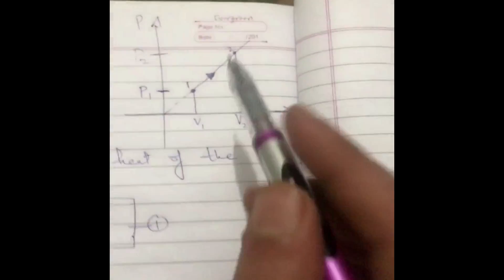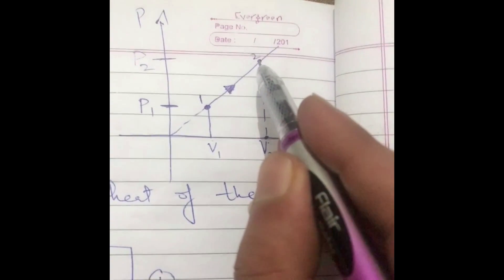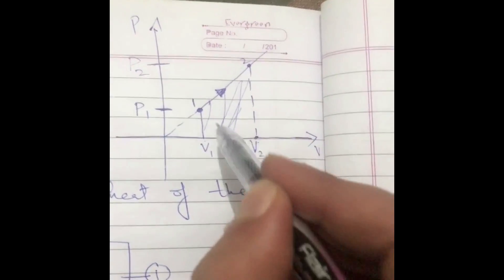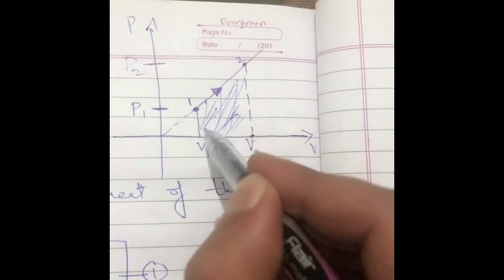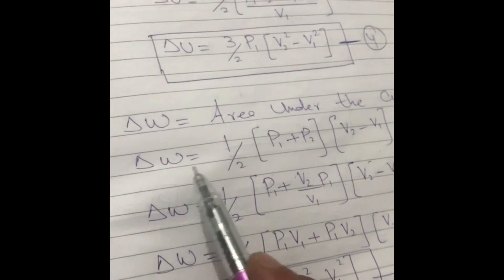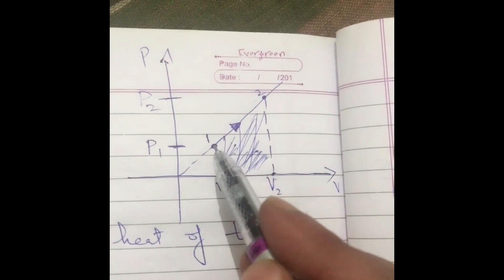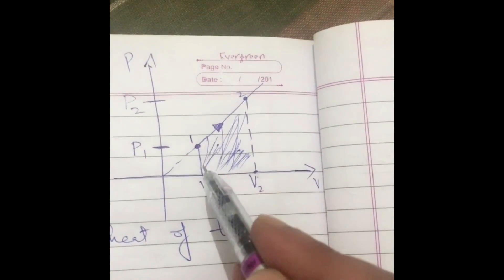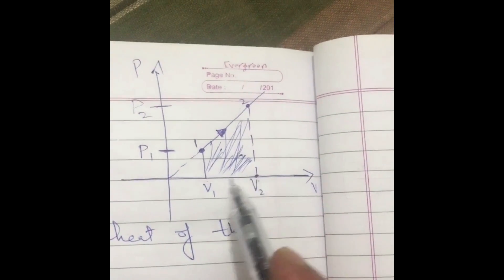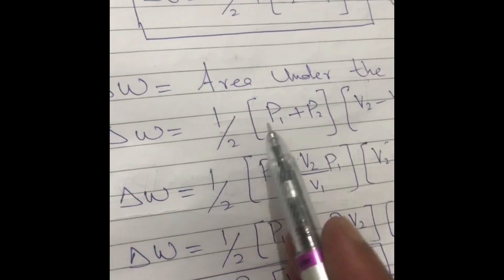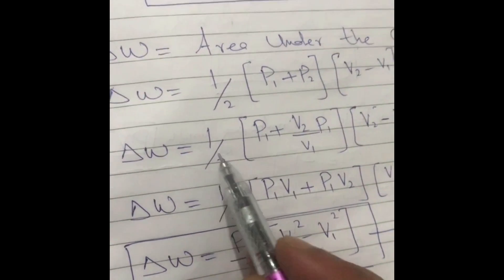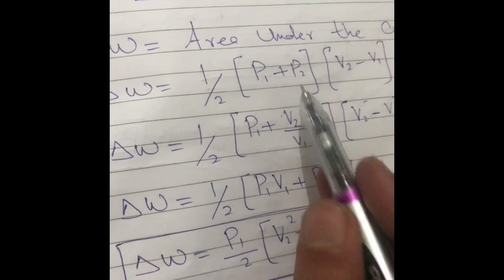Now, when the system goes from point 1 to point 2, how much work is done? The work done equals the area under the PV curve between states 1 and 2. This area forms a trapezium. The trapezium area equals one-half times the sum of the parallel sides multiplied by the height. One parallel side is p1, the other is p2, and the height is v2 minus v1.